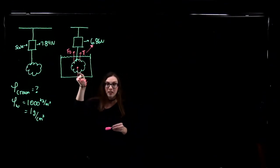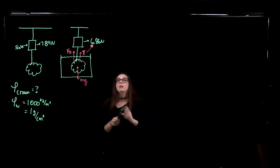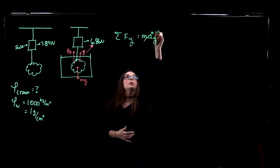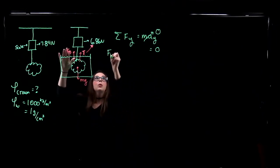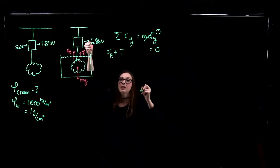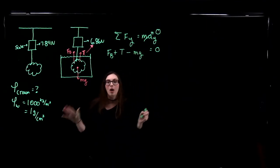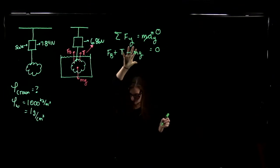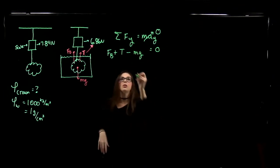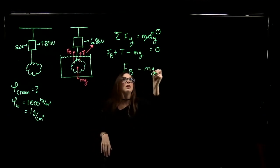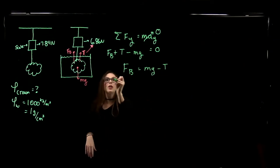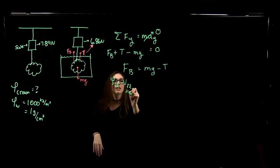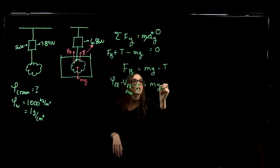We've got these three forces acting on the object when submerged. Applying Newton's second law in the vertical direction: the sum of all forces in the y-direction equals mass times acceleration, and we're not accelerating. So: buoyant force (upward) plus tension force (upward) minus mg equals zero. Moving terms over, the buoyant force equals mg minus T. The buoyant force is the density of the fluid times the volume of fluid displaced times gravity, and that equals mg minus T.